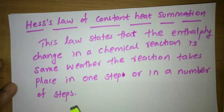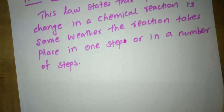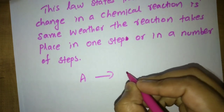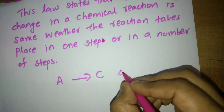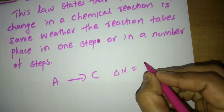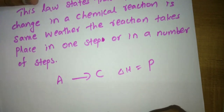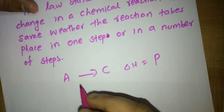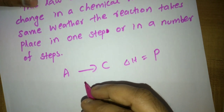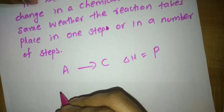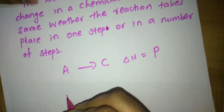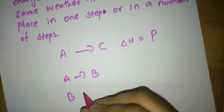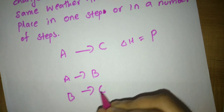Consider a chemical reaction A gives C, whose enthalpy change delta H is equal to p. Assume delta H is p — that is, the enthalpy change is p. So this reaction takes place in a single step. Now, if this reaction takes place in two steps, assume A gives B, and B gives C.